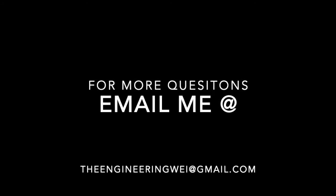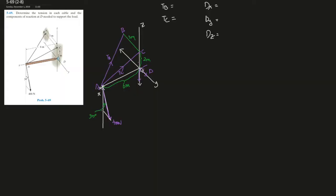I can assist you or tutor you more if you have more questions, just email me. This question asks for the tension in each cable and the components of reaction at D needed to support the load. This question is really similar to question 66 - it's actually a little easier because a lot of things cancel out in the end, but it's relatively difficult and requires you to use moments in 3D methods to solve the problem.